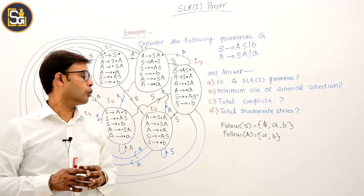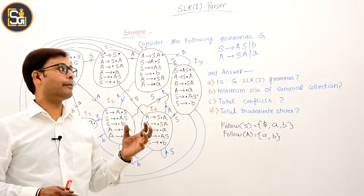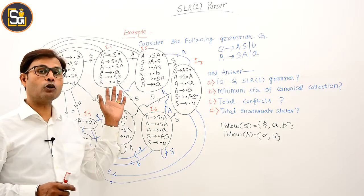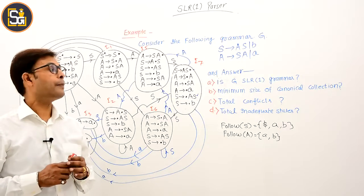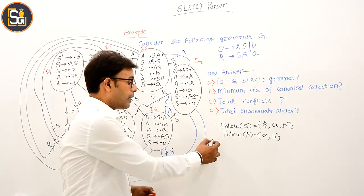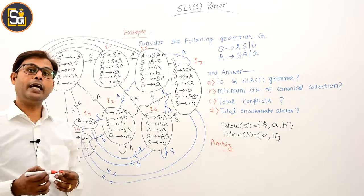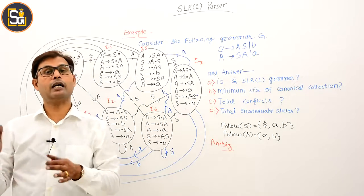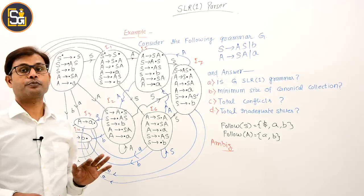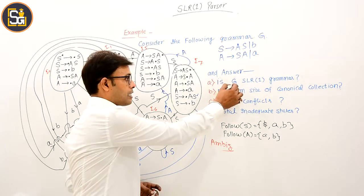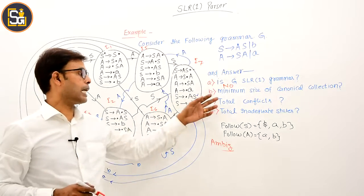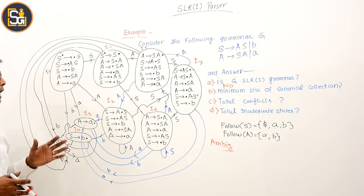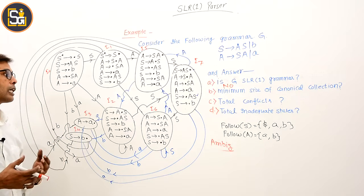For this grammar, the question is whether it is an SLR(1) grammar. To answer this, we need to construct the LR(0) automaton. You can understand that this grammar is ambiguous, and the constructed automaton is quite complicated.